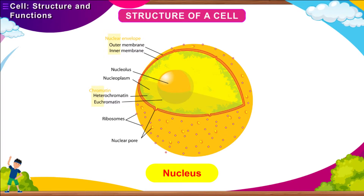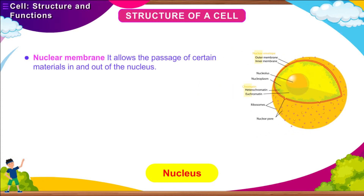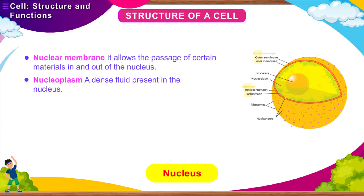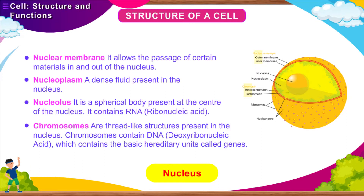Nucleus: The nucleus is found suspended in the cytoplasm as a squamous or oval-shaped body, surrounded by a thin membrane called the nuclear membrane. It is located at the center of the cell in animal cells and controls the vital functions of the cell. It consists of four major parts: the nuclear membrane, which allows passage of certain materials in and out of the nucleus; nucleoplasm, a dense fluid present in the nucleus; nucleolus, a spherical body at the center of the nucleus containing RNA (ribonucleic acid); and chromosomes, thread-like structures containing DNA (deoxyribonucleic acid), which contains the basic hereditary units called genes.